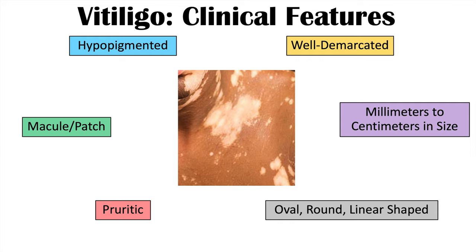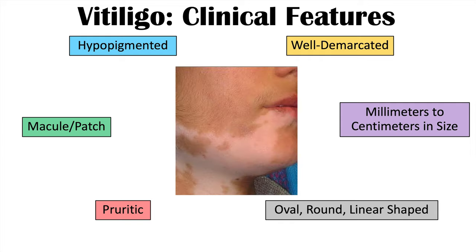Some patients will also describe a tingling sensation from these lesions. As seen in another image of vitiligo, the lesions are flat, hypo- or depigmented, and well demarcated, and they can have a variety of shapes.